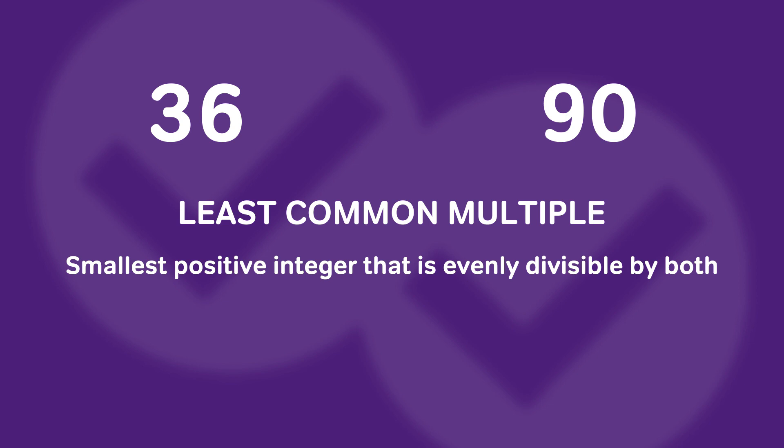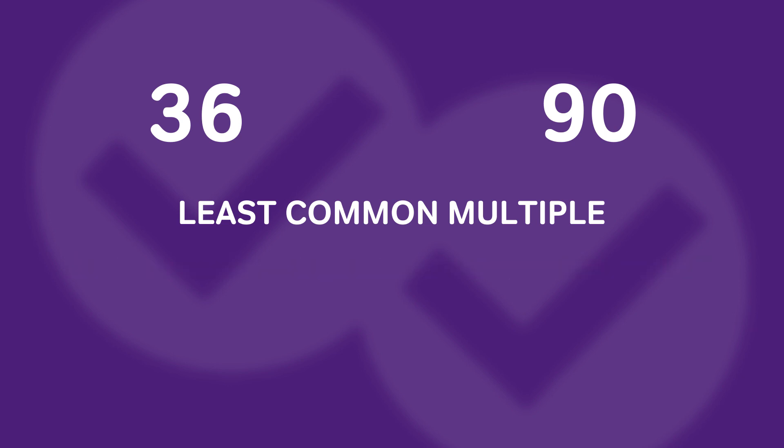Now, what is the least common multiple? The difference here is it is a number that is a multiple — meaning it has to be the same or bigger than the original numbers — and it is the least of those shared multiples. For instance, multiples of 36 are 36, 72, 108, and so on. We're looking for the point where 36 and 90 share a multiple. You could keep counting up, but that's really time-consuming, so I'll show you a faster way.